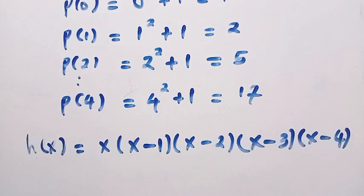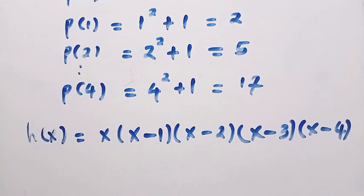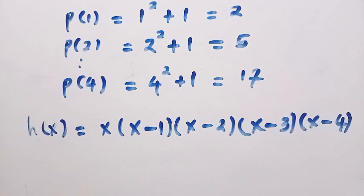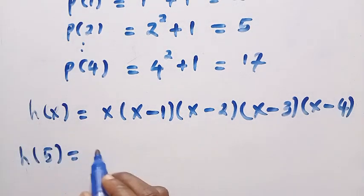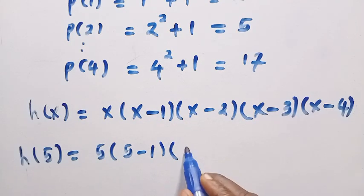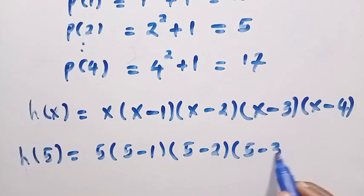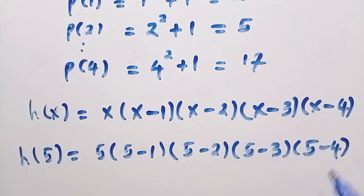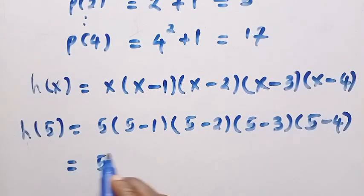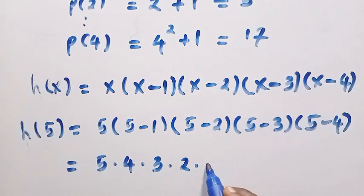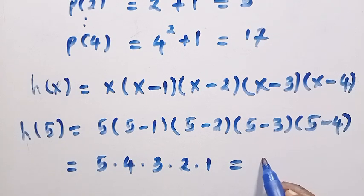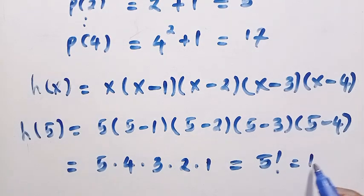We have to know h of 5. Since we have tested for p of 5, we have to know h of 5 as well. h of 5 equals 5 into bracket of 5 minus 1 multiplied by 5 minus 2 multiplied by 5 minus 3 multiplied by 5 minus 4. We see that here is 5 multiplied by 4 multiplied by 3 multiplied by 2 multiplied by 1. 5 times 4 times 3 times 2 times 1, this gives us 5 factorial, and 5 factorial equals 120.